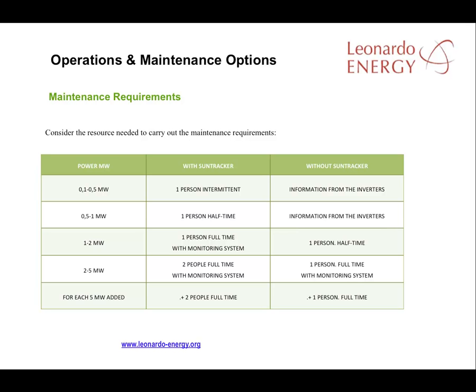An effective maintenance policy should answer the questions: who, how, and with which tools? The answers will probably vary according to the size of the solar plant. Here we have a table with different plant size options for ground facilities, depending on whether sun trackers are used. Sun trackers need more maintenance than fixed systems. A plant of one to two megawatts needs one person full-time with an advanced monitoring system if sun trackers are used. Without sun trackers, the same size plant need only have one person part-time.